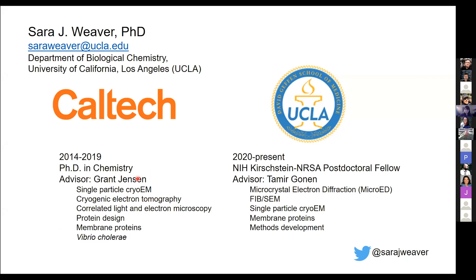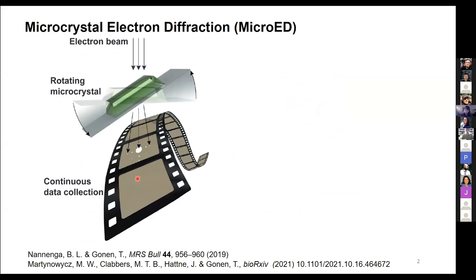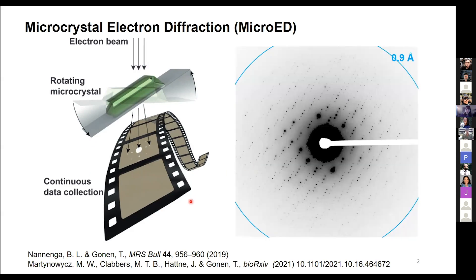I'd like to tell you some of our tricks today. Microcrystal electron diffraction was pioneered in the Gonan lab. We continuously rotate a microcrystal or nanocrystal in the electron beam and collect diffraction data as a movie. This gives us diffraction patterns, we can get the intensity of each reflection, and then use phasing methods to solve structures. Since the data are collected continuously, it's analogous to x-ray crystallography, and traditional x-ray software can be used to process a lot of the data.